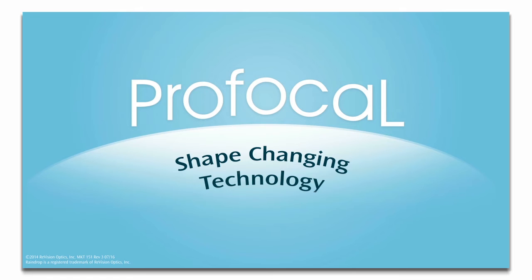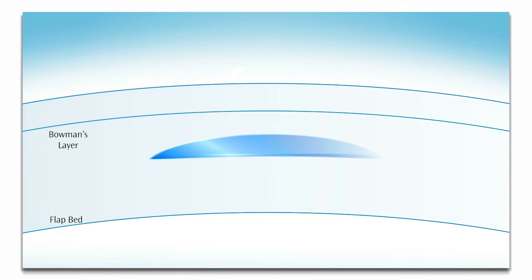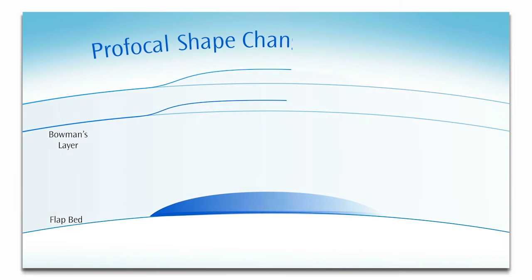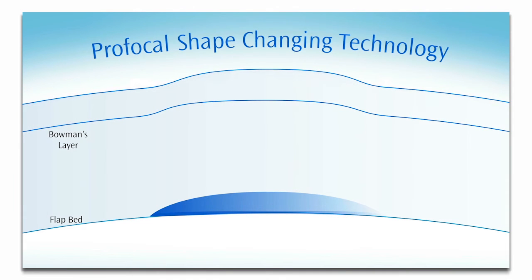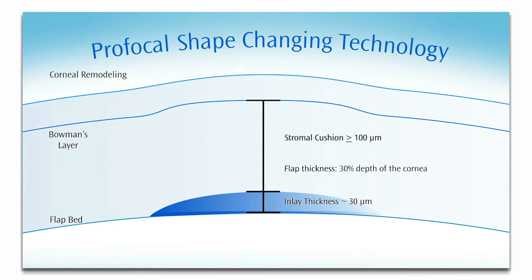This is an animation of the shape-changing technology that results in Raindrop's unique profocal shape. The inlay is implanted on the stromal bed under a femtosecond laser flap created at about 30% of the central corneal thickness. The resulting elevation from the thickness of the inlay and the epithelial remodeling of the cornea create the progressive prolate shape.